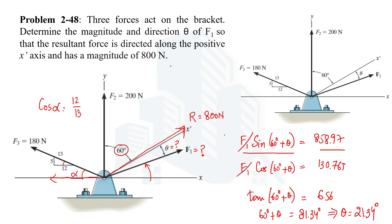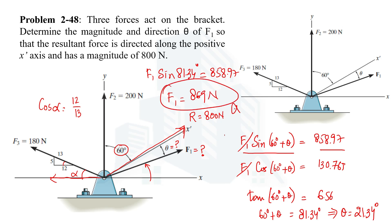We also need to determine the magnitude of F1. This can be calculated by substituting the known angle into either equation. Placing theta into equation one: F1 sin(81.34°) = 858.97. On simplifying, we get F1 = 869 Newton. This is the other answer. So we have now determined both the direction (theta = 21.34°) and the magnitude (869 N) of F1.